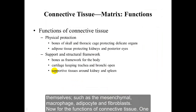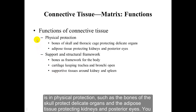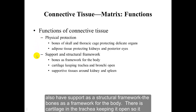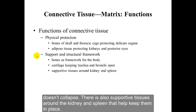The functions of connective tissue include physical protection, such as the bones of the skull protecting delicate organs, and adipose tissue protecting the kidneys and posterior eyes. You also have support and structural framework: the bones as a framework for the body, cartilage in the trachea keeping it open so it doesn't collapse, and supportive tissues around the kidney and spleen that help hold them in place.